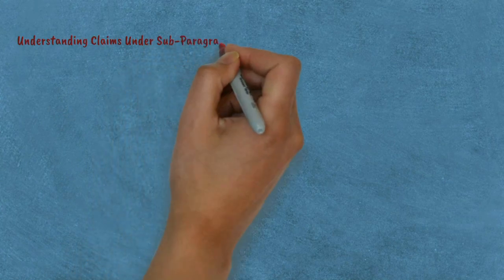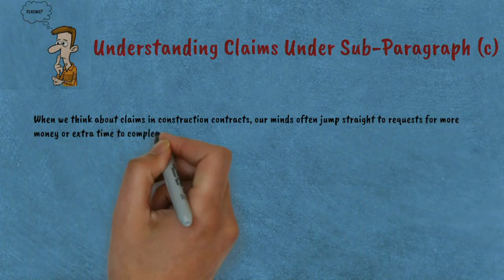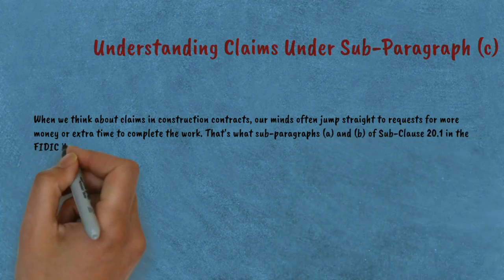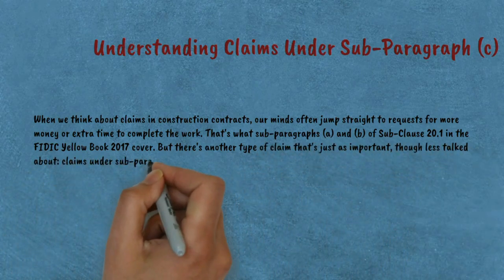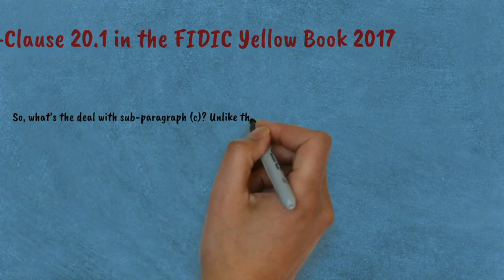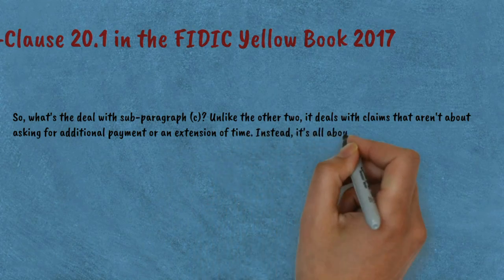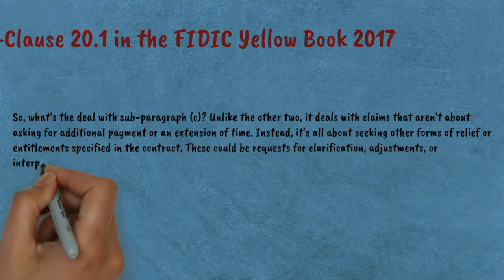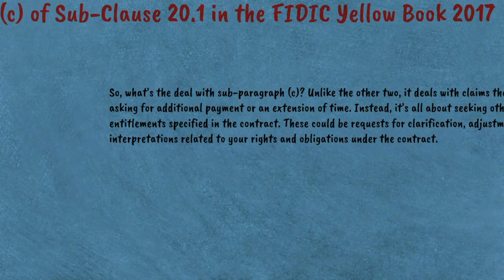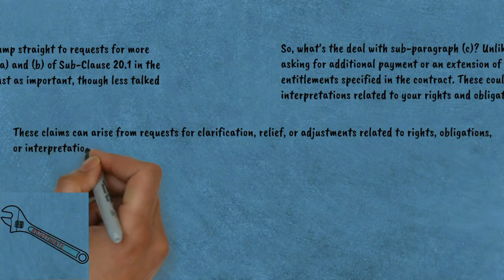Understanding claims under subparagraph C of Sub-clause 20.1 in the FIDIC Yellow Book 2017. When we think about claims in construction contracts, our minds often jump straight to requests for more money or extra time to complete the work — that's what subparagraphs A and B of Sub-clause 20.1 cover. But there's another type of claim that's just as important, though less talked about: claims under subparagraph C. Unlike the other two, subparagraph C deals with claims that aren't about asking for additional payment or an extension of time. Instead, it's about seeking other forms of relief or entitlements specified in the contract — requests for clarification, adjustments, or interpretations related to rights and obligations under the contract.